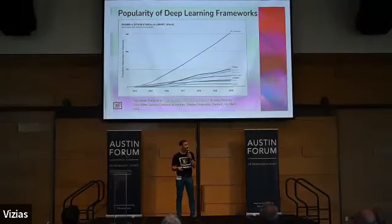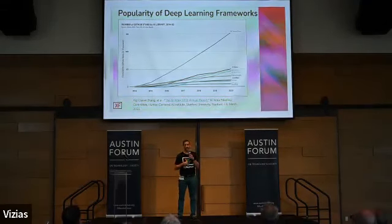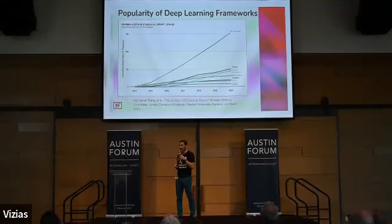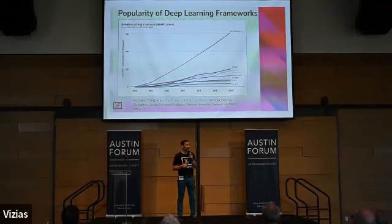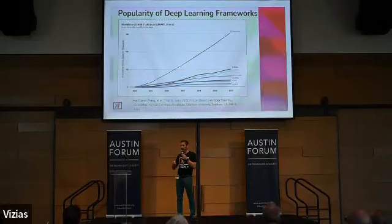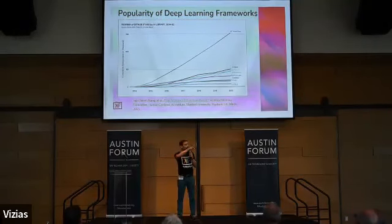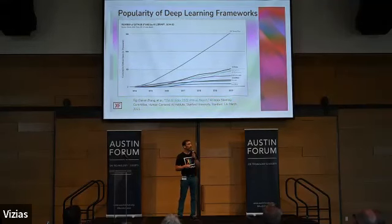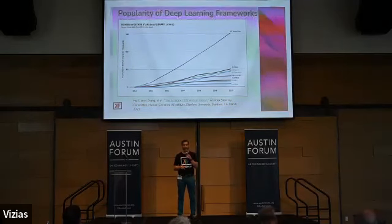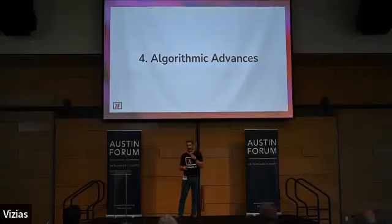A key ingredient is that big companies like Microsoft, Facebook — now Meta — have made open source frameworks available for free, which has tremendously spurred the growth of many areas of AI and machine learning. A plot showing popularity on GitHub — where you give a package a star like liking something on Facebook — shows that TensorFlow is the most popular, but there's strong growth in other deep learning frameworks.